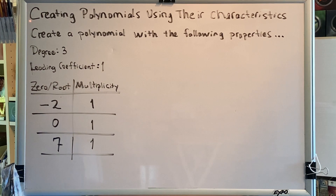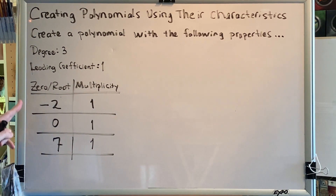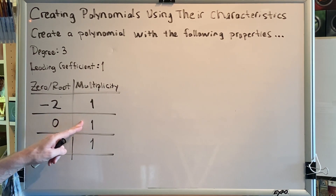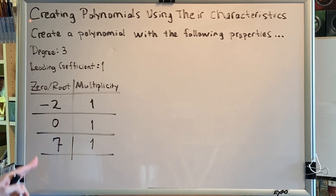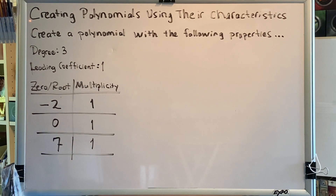Degree 3, leading coefficient 1, and the following roots and their associated multiplicities. For root negative 2, the multiplicity is 1. For root 0, the multiplicity is 1. For root 7, the multiplicity is 1.